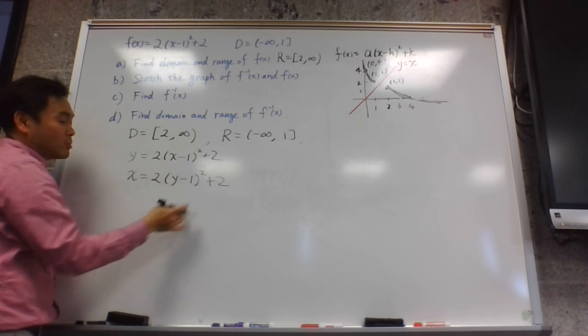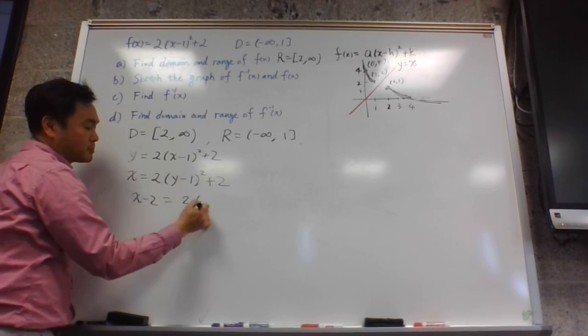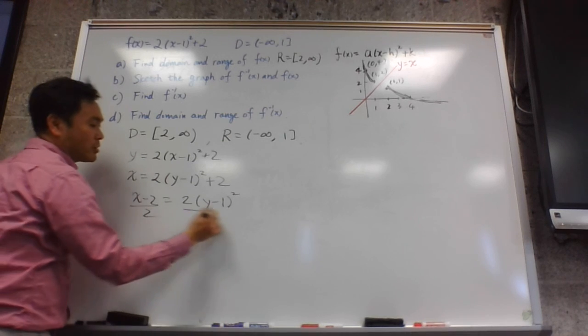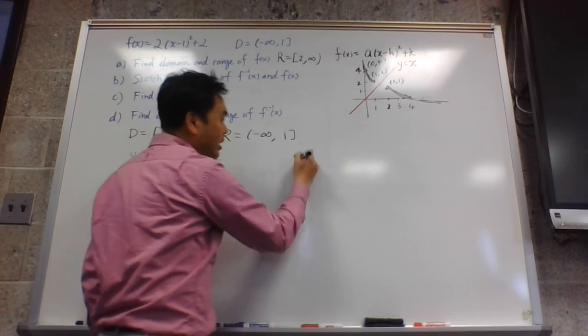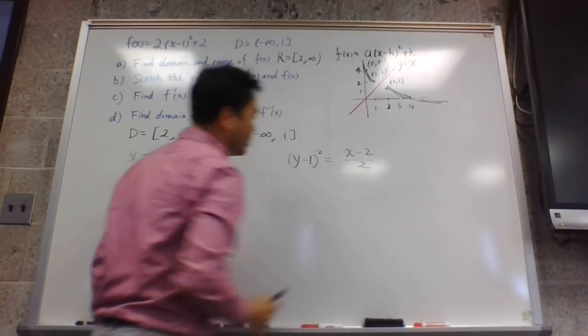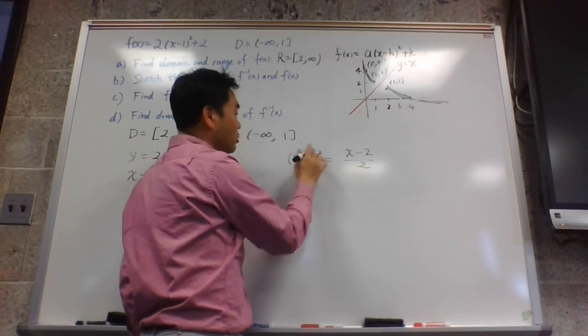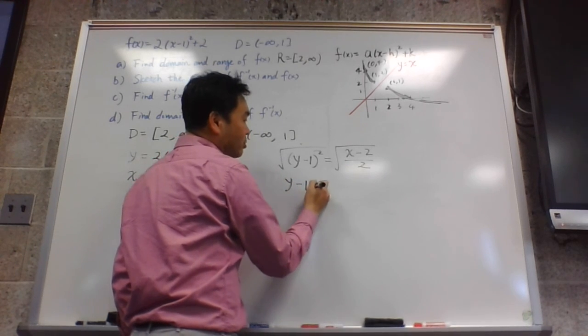Then what do you do? You solve for y. So you subtract 2 both sides. Divide by 2 both sides so that this 2 goes away. And you end up with (y minus 1) squared equals (x minus 2) over 2.